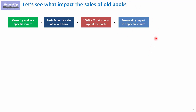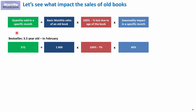For example, if we had a bestseller that was three and a half years old and wanted to estimate its sales in February, we look at the basic monthly sales of an old book, which for a bestseller is 1,000. Then we reduce by 7% due to age — so 93% of basic monthly sales — and apply the February seasonality factor of 40%. This gives us 372 pieces sold in February.